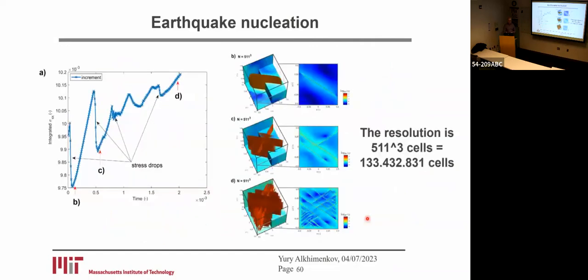I also repeated it in three dimensions — you can see three-dimensional simulation as before. There are major stress drops and also small stress drops. The resolution is again quite high: 500 cube corresponding to more than 100 million grid cells.